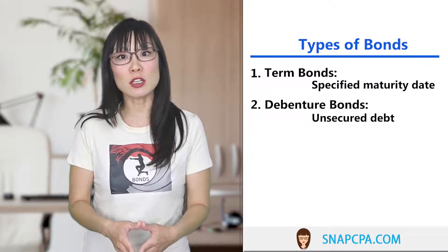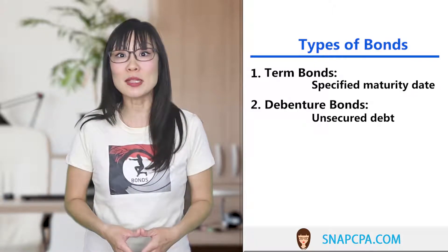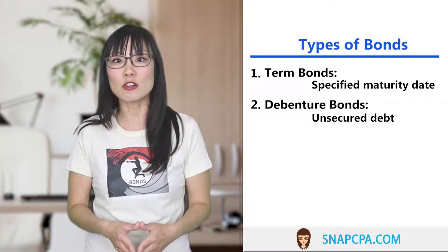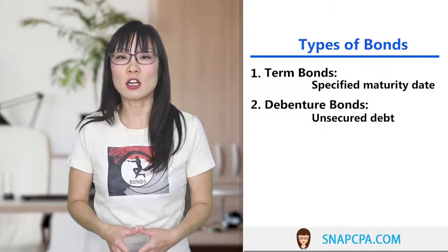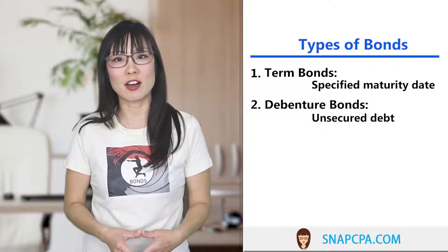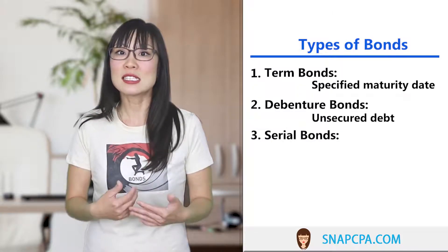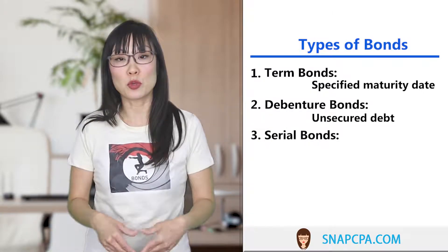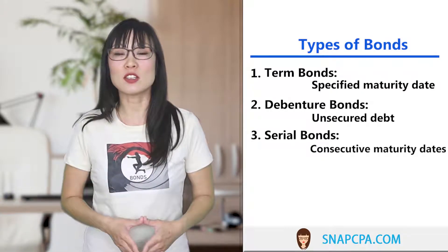A debenture bond is similar to credit card debt — if you have a credit card, you probably didn't have to put up any specific collateral to borrow money. So lenders on a debenture bond are just general creditors, like credit card companies.